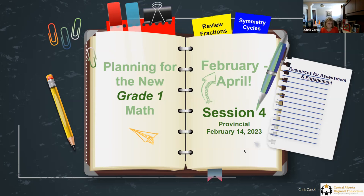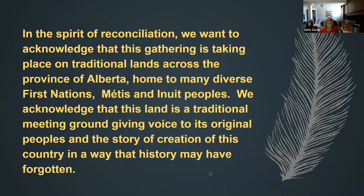I'm going to talk a little bit about fractions again because that conversation comes up now in our year at a glance. It's not a fraction in terms of a written number of one over something — that's not what they're asked to do in Grade 1. I also want to spend a little bit of time on symmetry, because that also comes into play at this point, along with cycles.